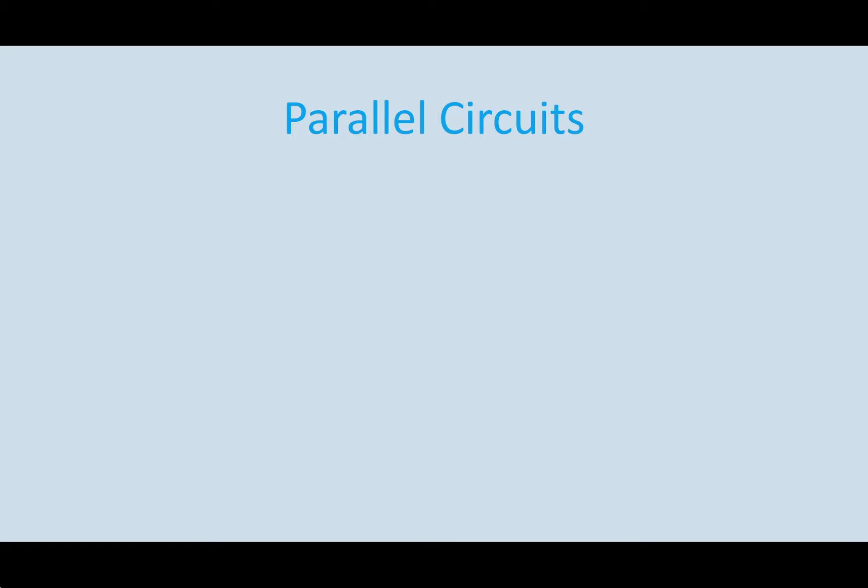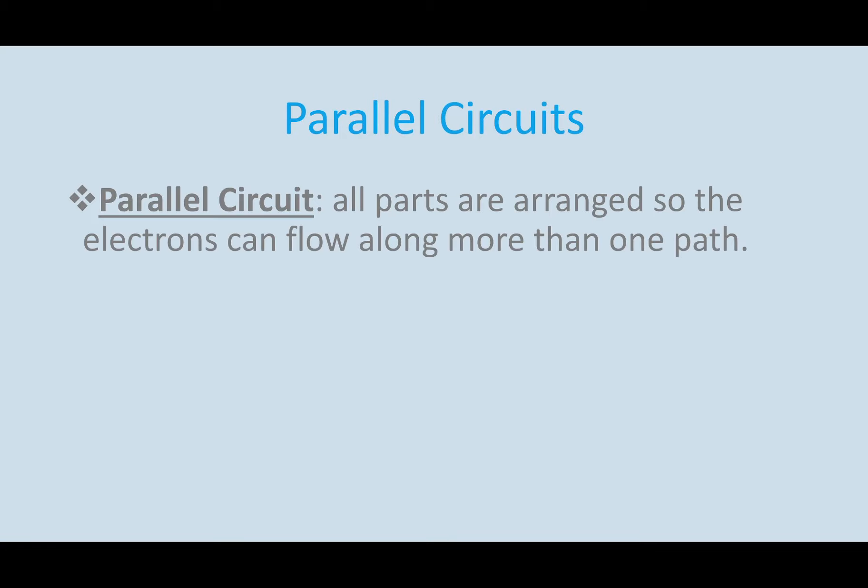Parallel circuits are the other type. Parallel circuits, all parts are arranged so that the electrons can flow along more than one path. So that's the key difference. Parallel circuits, there is more than one path, and in series circuits, there is only one path.